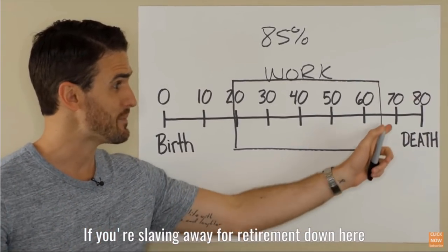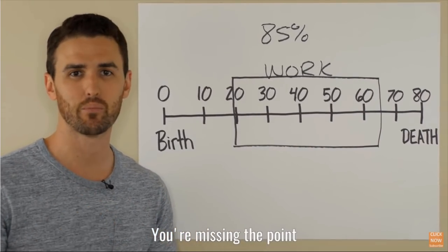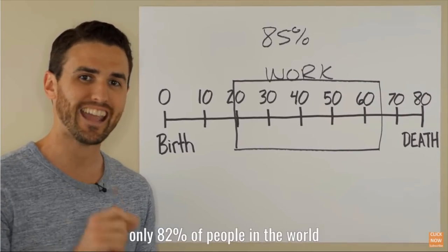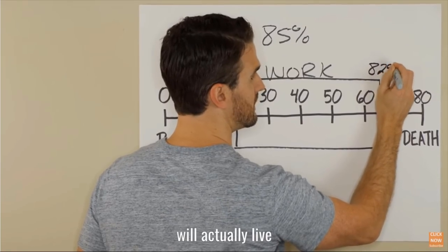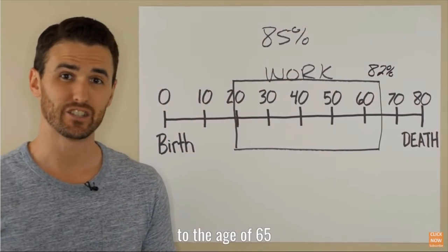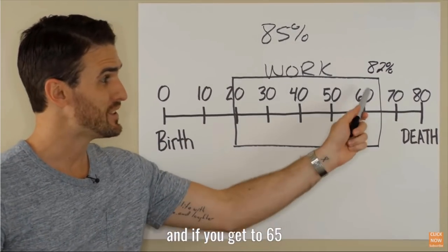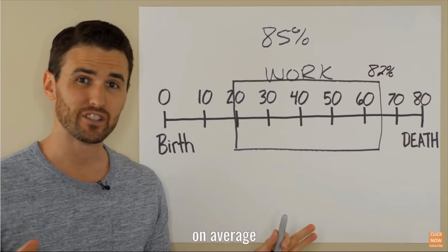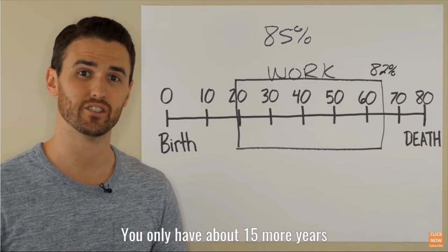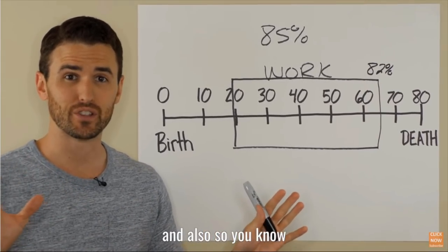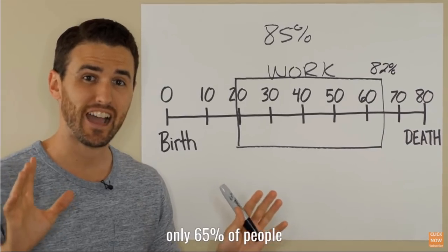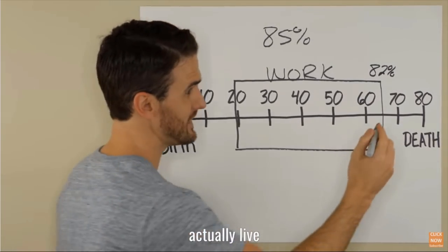And just so you know, if you're slaving away for retirement, you're missing the point, because only 82% of people in the world will actually live to the age of 65. And if you get to 65, on average you only have about 15 more years left to live after you retire. Only 65% of people actually live into the age of 80.